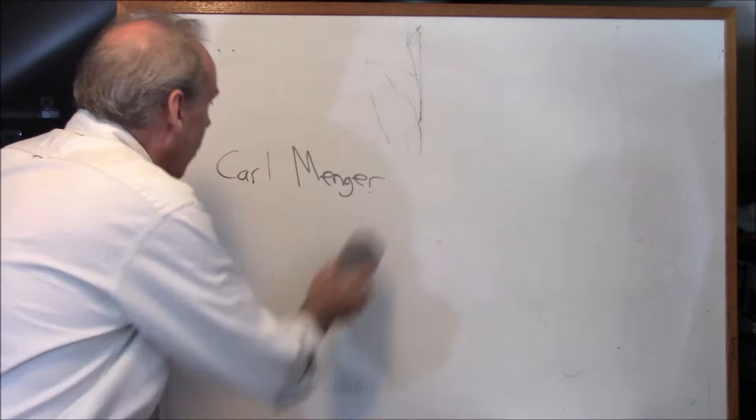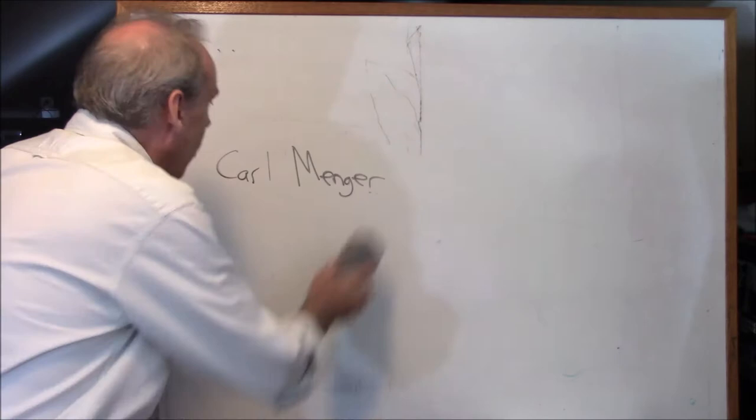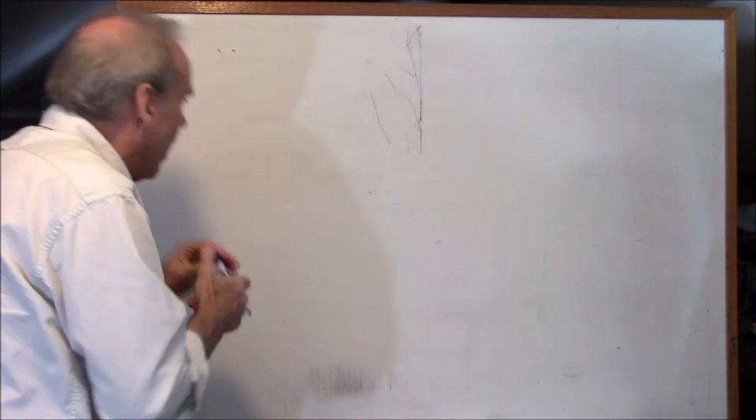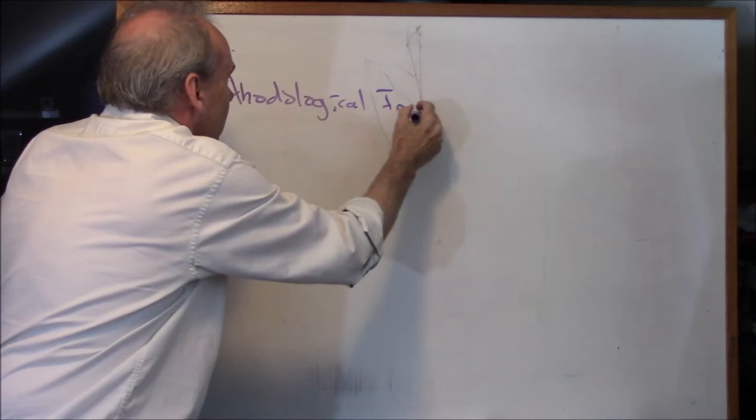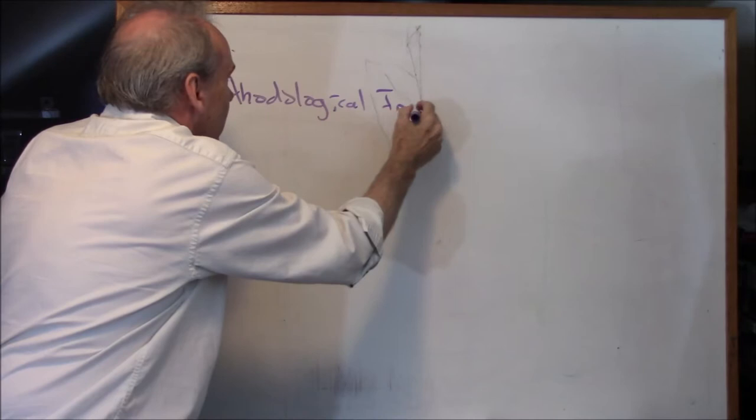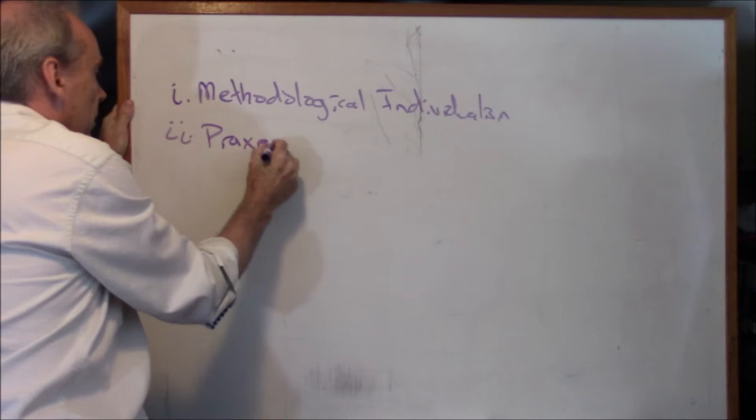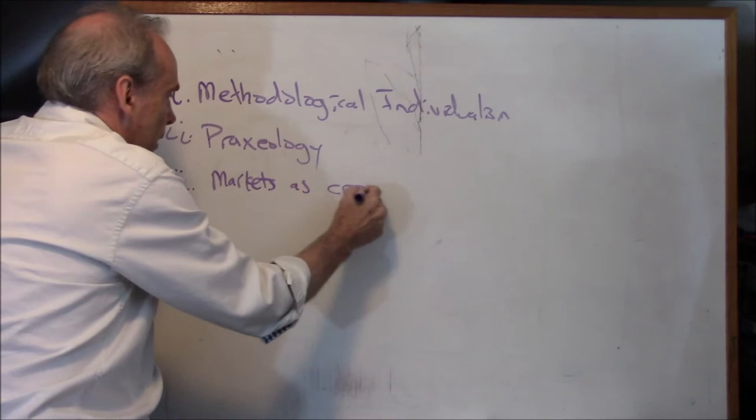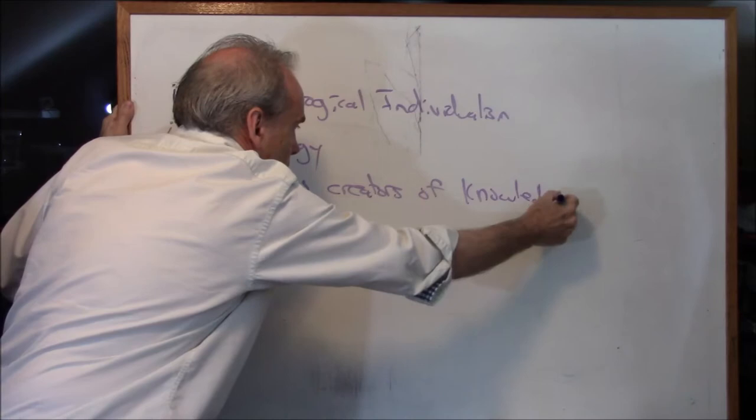So that's what I want to give you. I want to give you four major characteristics of Austrian economics. And I'll list them out here, and then I'll talk about them. Methodological individualism. Praxeology. Third, markets as creators of knowledge. And fourth, process.